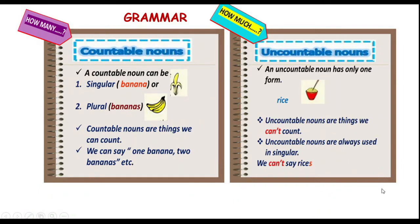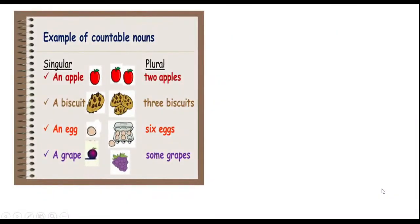Let's have a look at examples of countable nouns. In singular you can say: an apple; in plural: two apples. A biscuit, three biscuits. An egg, six eggs. A grape, some grapes.